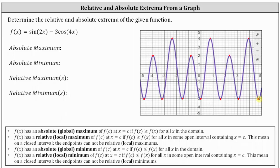Let's begin by identifying the absolute extrema, where the absolute maximum is the function value f of c, where f of c is greater than or equal to all the other function values f of x for all x in the domain. Notice how these three highest points here have a y value or function value of positive four. All their function values are less than or equal to four. Four is the absolute maximum.